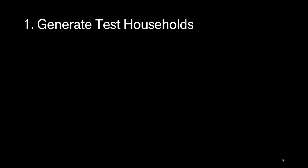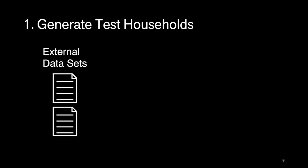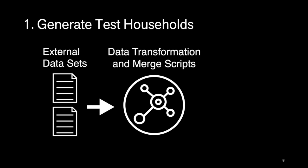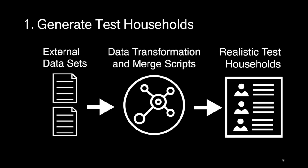First in our method, we generate test households. We start with external data sets, always attempting to choose those that cover the same jurisdiction as the screening tool. Since we target a Pennsylvania state tool, we used a census data set that described Pennsylvania families. For fields solicited by the tool but not present in the base data set, we located supplemental data sets. We trained a machine learning model on columns in common between the base data set and supplemental data set, and then predicted the missing values in the base data set. In the end, we have a data set of tractable size which contains all the fields the screening tool solicits, and which is arguably representative.